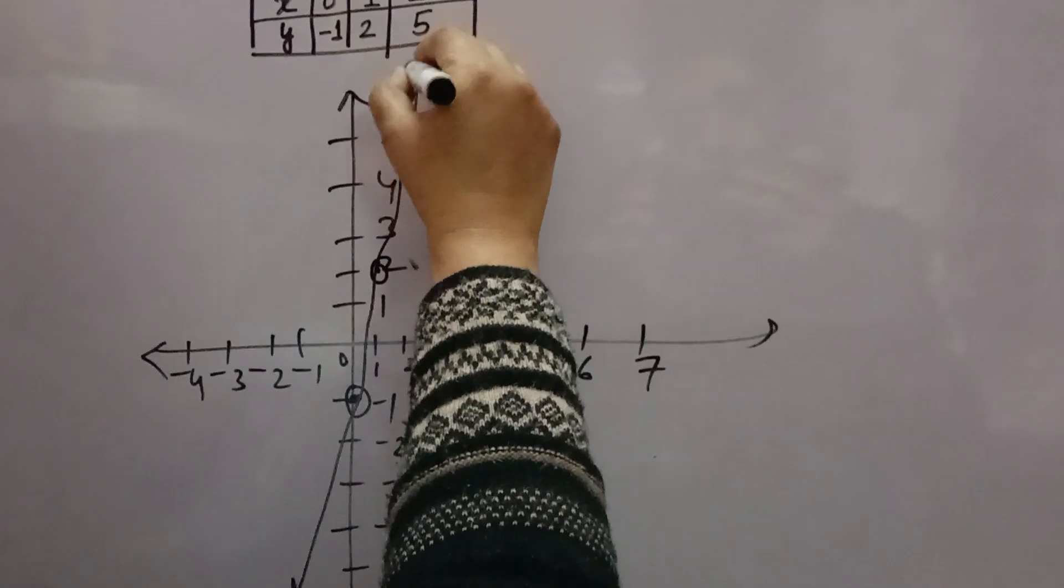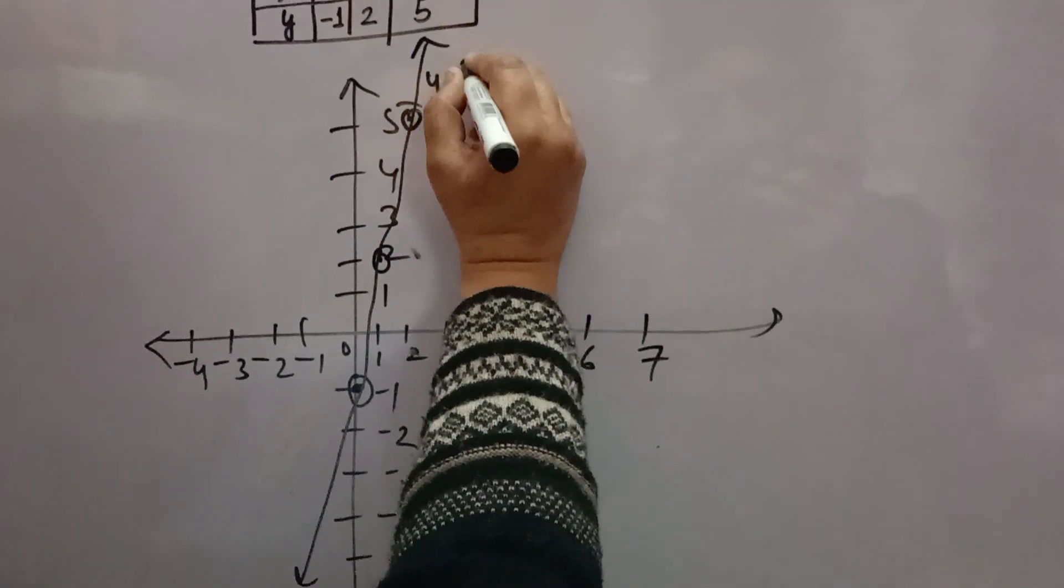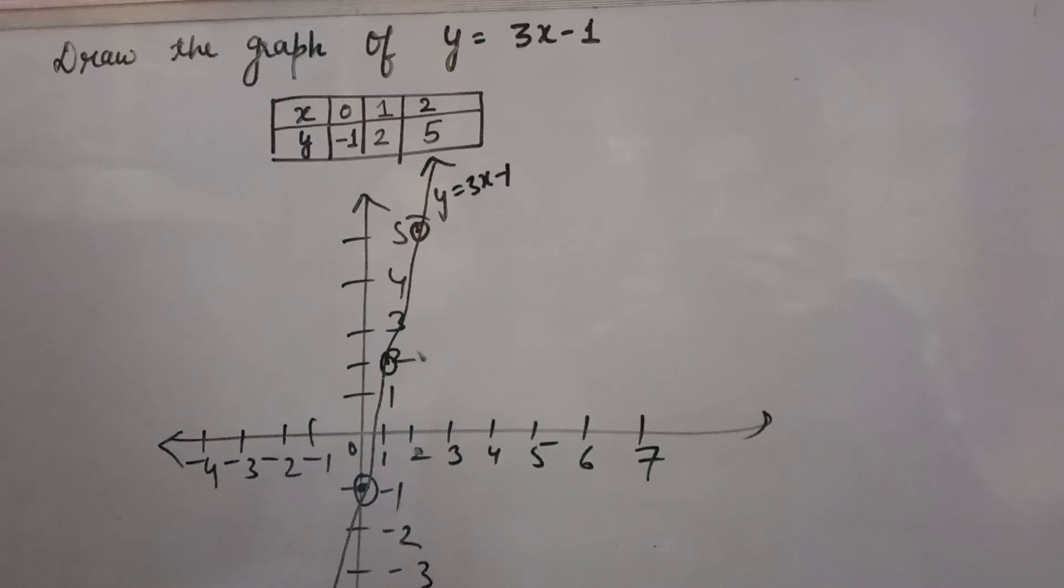On your graph, so y is equal to 3x minus 1. This is the graph. Thank you.